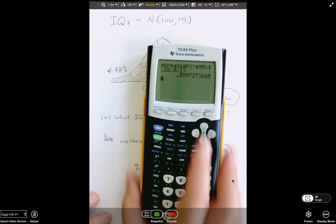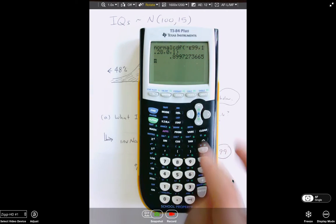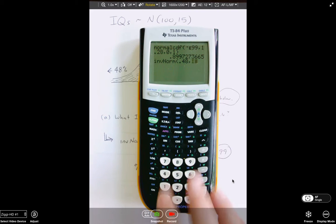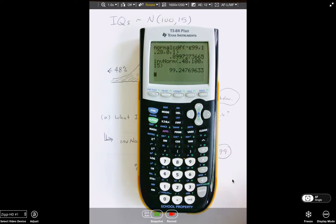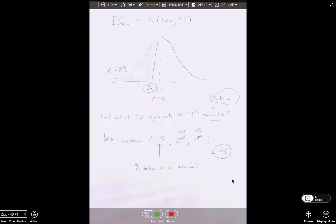So the other calculator is just going to work similarly. Second function distribution, come down to number three, inverse norm. So here we're going to have 0.48, 100, 15. So really, we get the same thing we get the other way in the end, and certainly get the same answer. So if you've got this kind of calculator that has this type of operating system, this is the way you use it. Or if you've got a newer calculator, you've got the newer operating system, which would be the way I demonstrated on the computer.